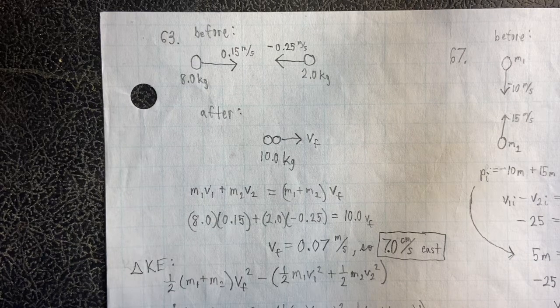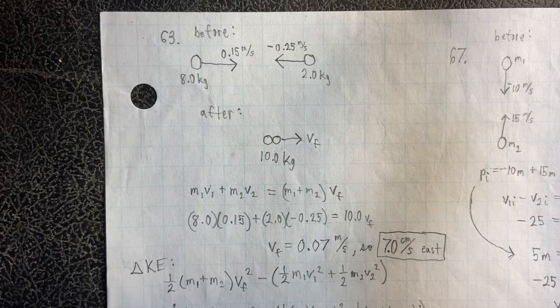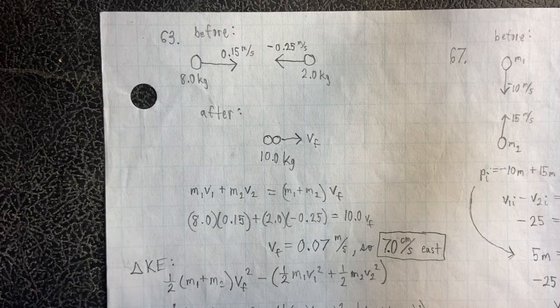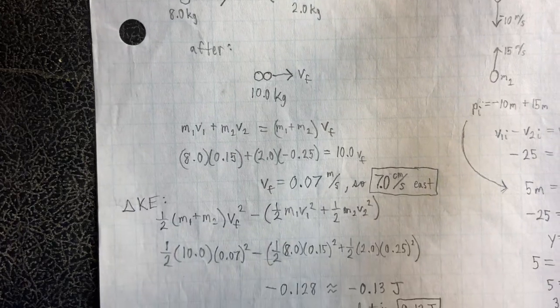So, the setup is M1 V1 plus M2 V2 equals the combined masses M1 plus M2 times VF. And when we do our plugging and chugging step, we find that the VF is 0.07 meters per second or 7.0 centimeters per second east.